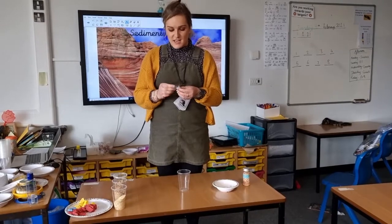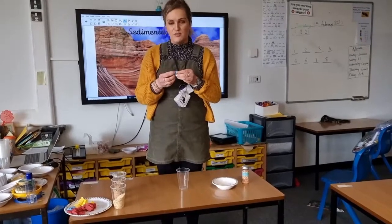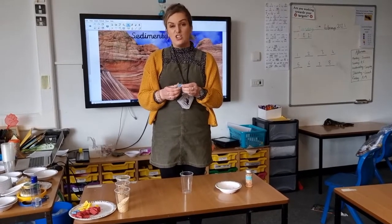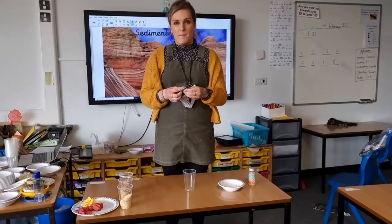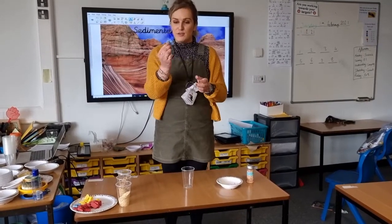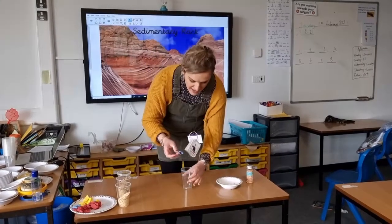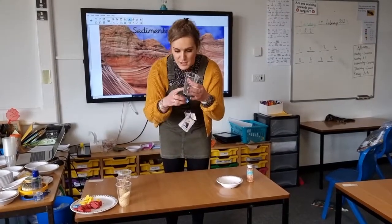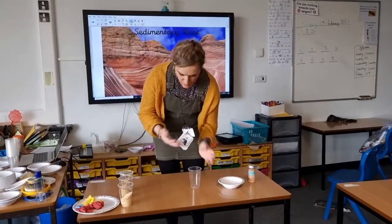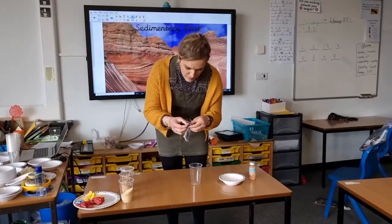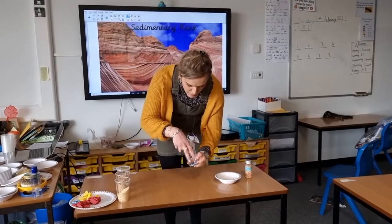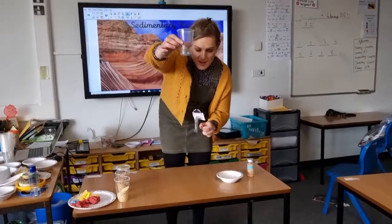So the first thing you need is blue fondant icing. You could use play dough or salt dough but remember you can't eat that, but fondant icing you can eat. So I've got blue fondant icing and this is going to be my seabed. I need a transparent cup so that you can see through it, and I'm going to mould it so that it's just a flat seabed and drop it into the bottom of my cup. So we've got our seabed.